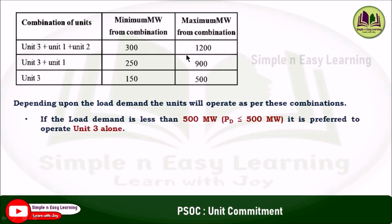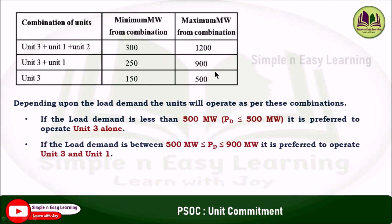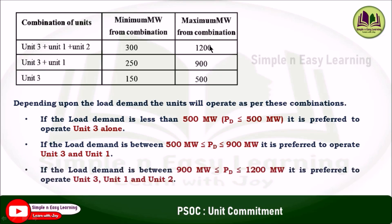If load demand is less than 500 MW, it is preferred to operate unit 3 alone. If load demand is between 500 and 900 MW, operate unit 3 and unit 1. If load demand is between 900 and 1200 MW, operate unit 3, unit 1, and unit 2. This is the unit commitment solution based on the priority list method using full load average production cost.